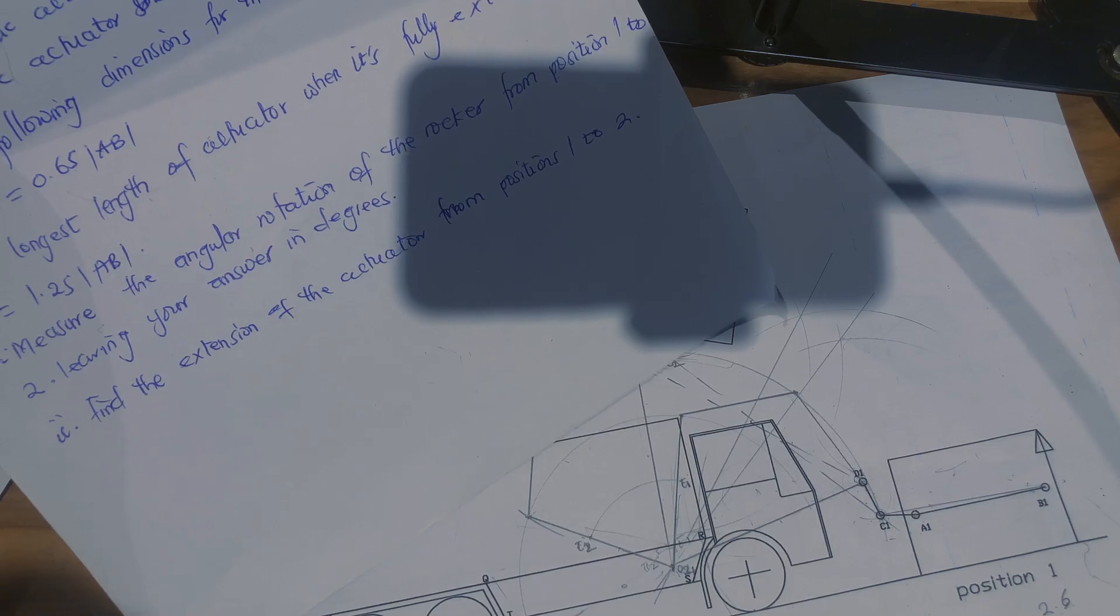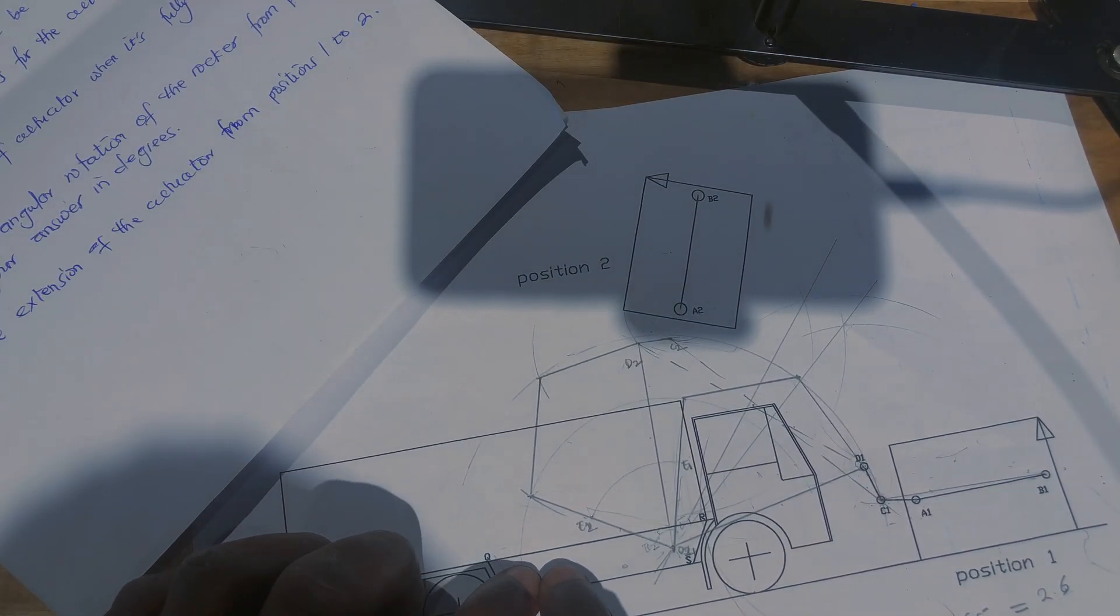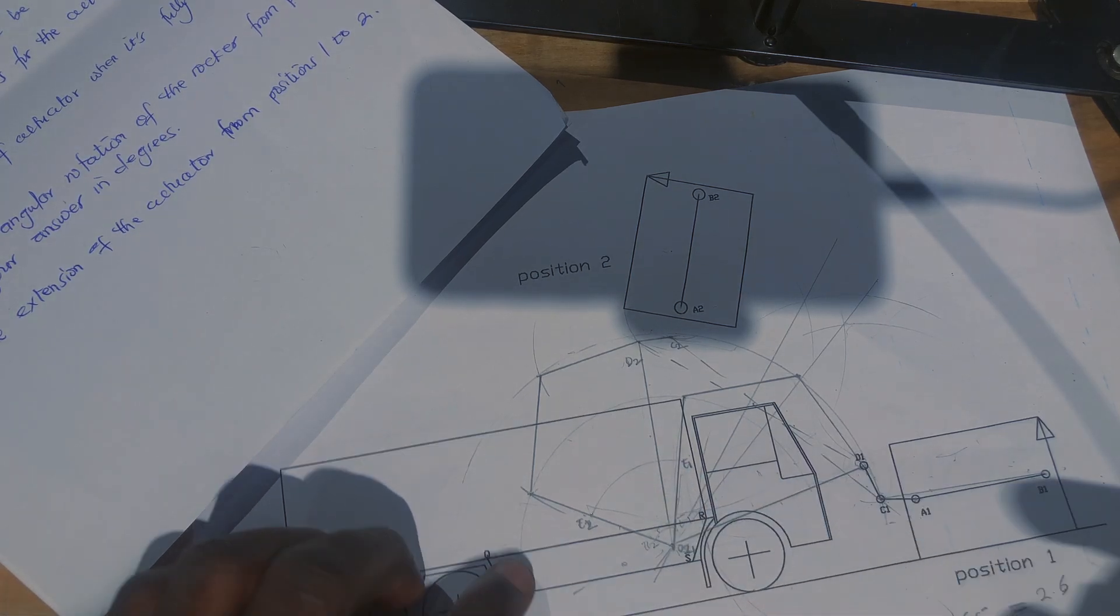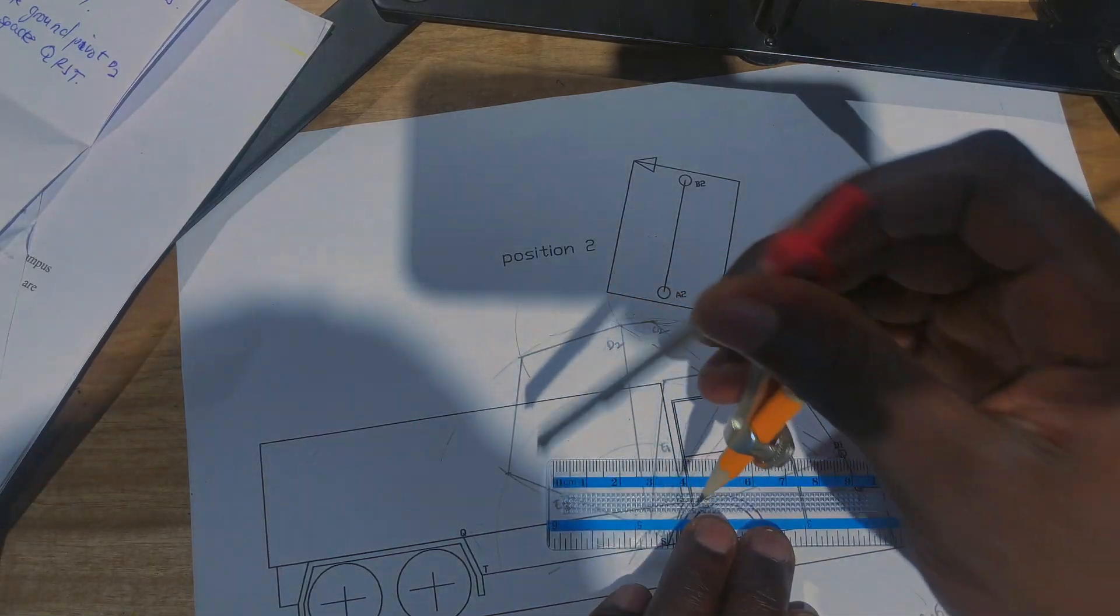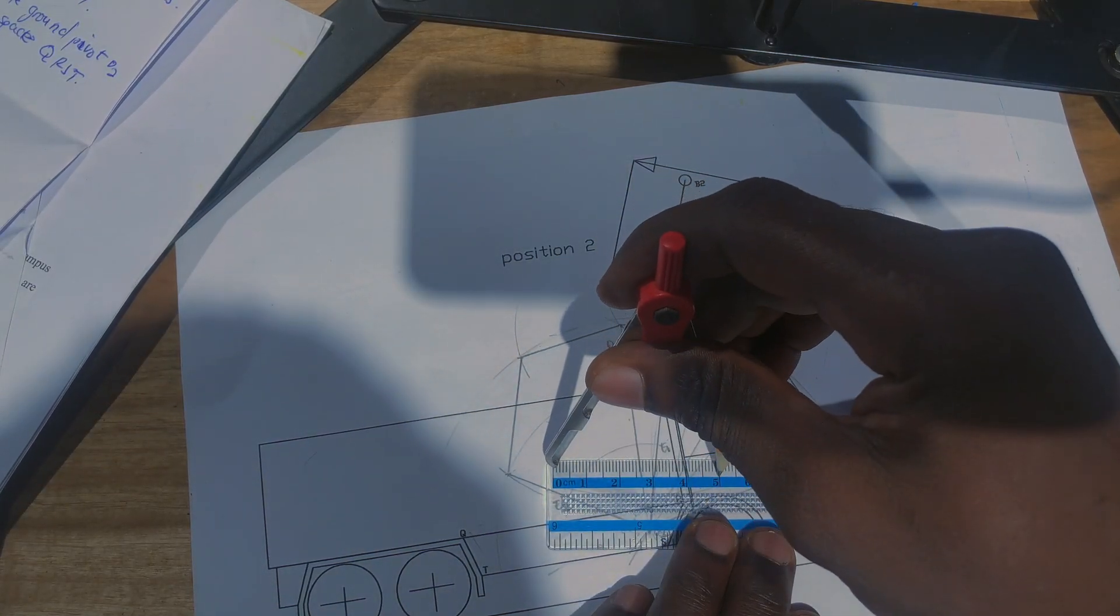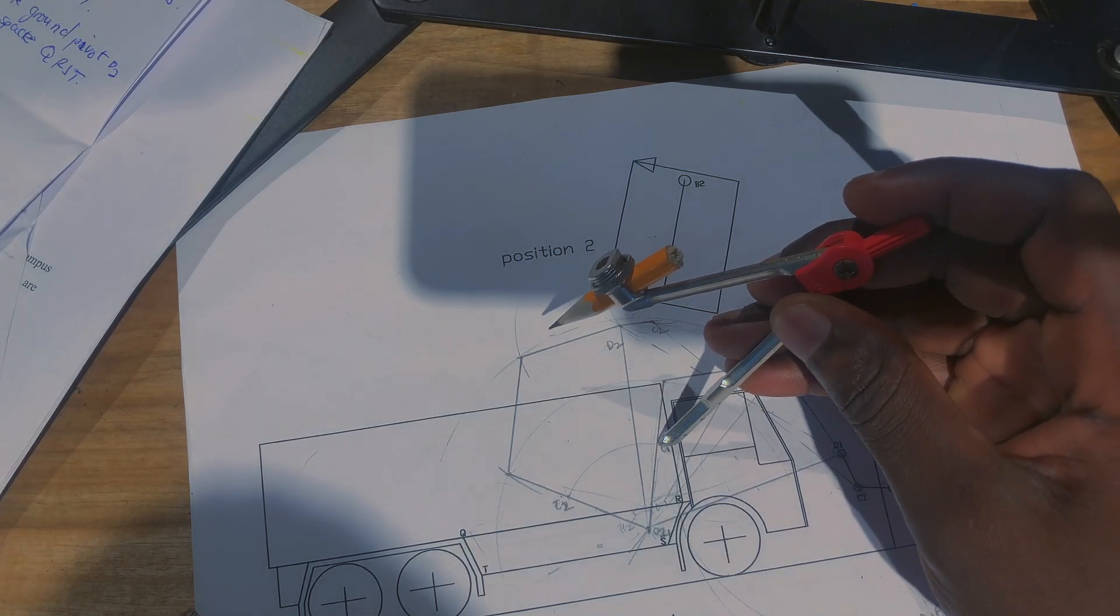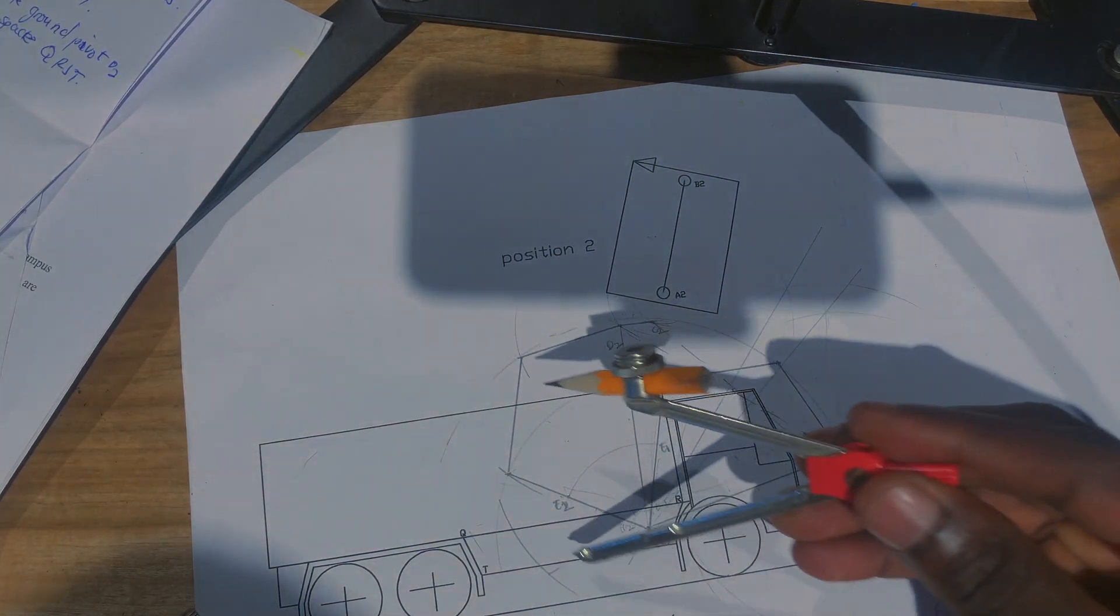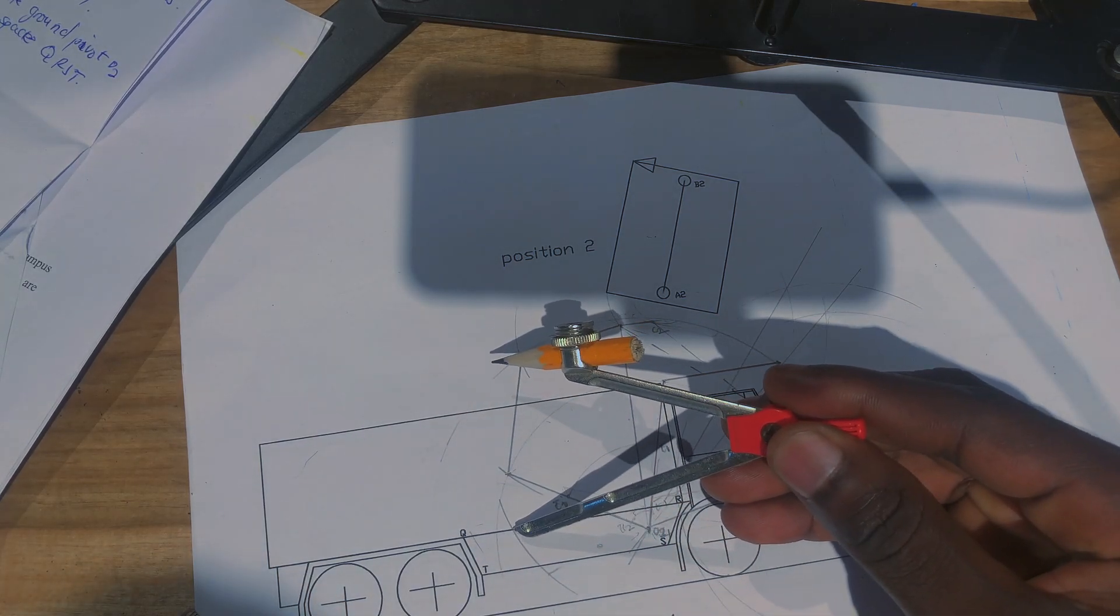So what I'm going to do is if the actuator is here, if the actuator is back here it will be fully extended at position one. You measure your five centimeters on the straight edge from here to here, five centimeters. Then you come to the attachment one and make an arc.